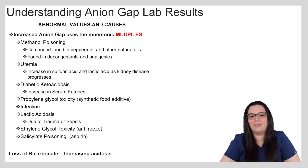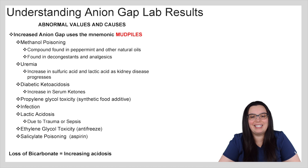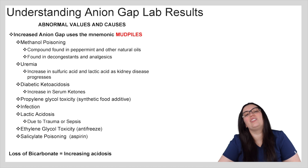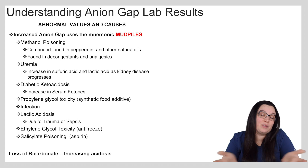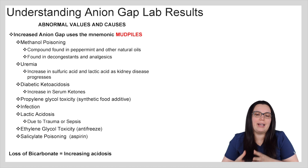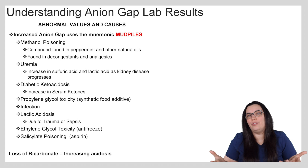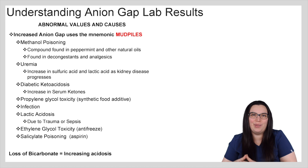There's a lot of acids with DKA. The P stands for propylene glycol toxicity — that's a synthetic food additive. The I stands for infection. L is for lactic acidosis due to either trauma or sepsis. E stands for ethylene glycol toxicity — that's those patients that drink antifreeze out of Gatorade bottles because they thought it was Gatorade. And the S stands for salicylate poisoning, which is your aspirin. Really, you're having this massive loss of bicarbonate, which is what's increasing that acidosis in the body.